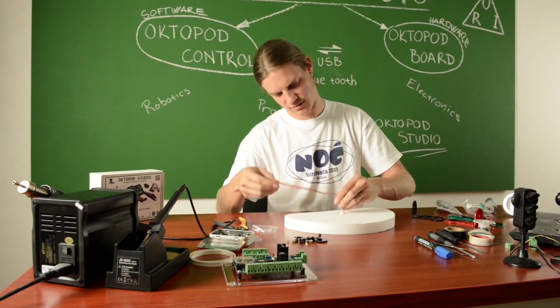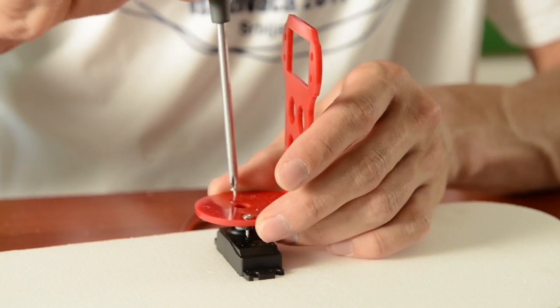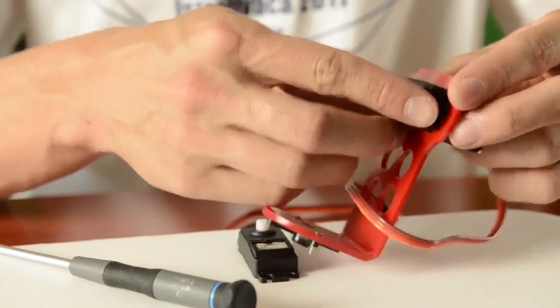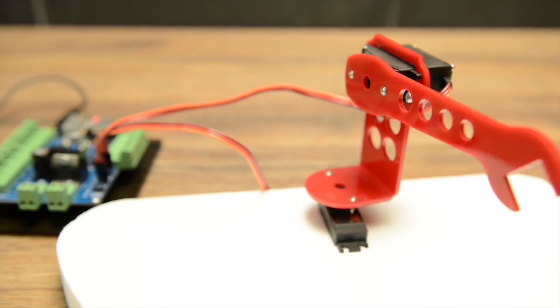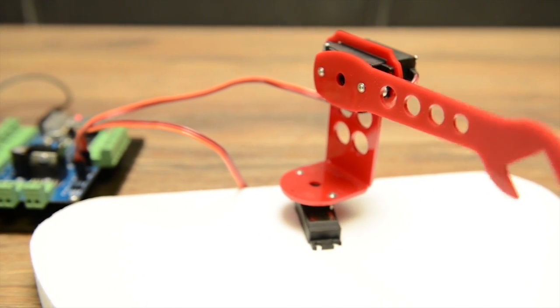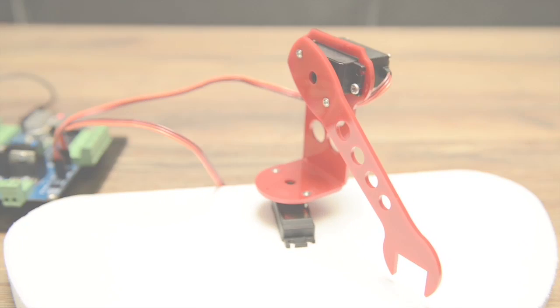So, let's summarize Octopod Studio features. It's designed for rapid learning, prototyping and experimenting. You don't need to be a programmer or electronic expert to make your own robotic projects. It's completely open source so you can develop your own computer and mobile phone applications for your needs.